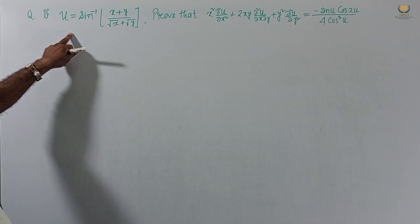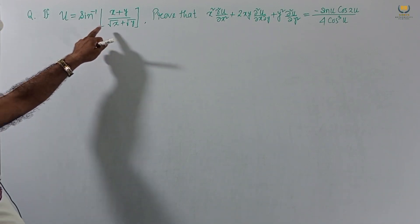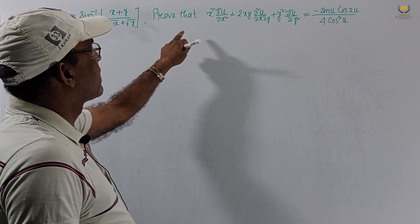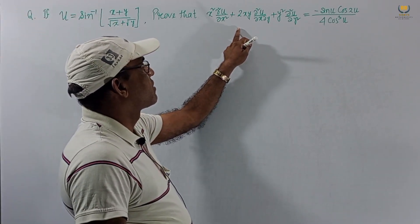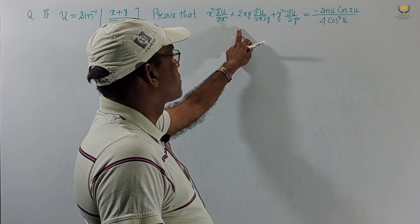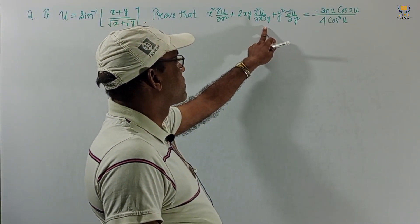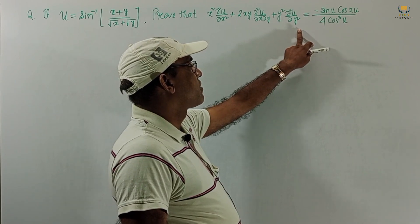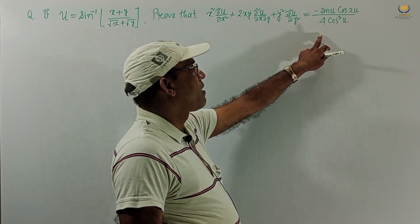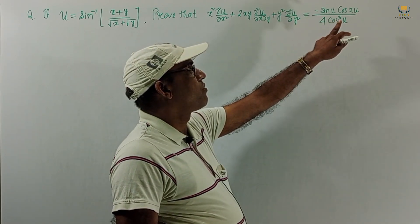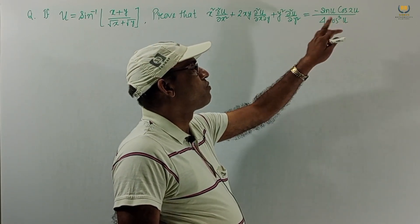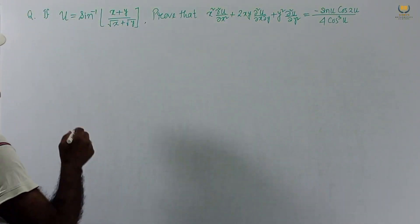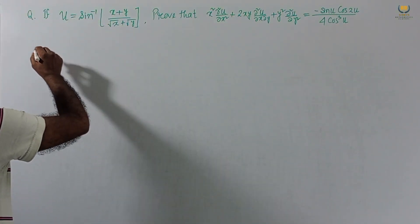Problem: If u = sin⁻¹((x + y) / (√x + √y)), prove that x²·∂²u/∂x² + 2xy·∂²u/∂x∂y + y²·∂²u/∂y² = −sin u · cos(2u) / (4cos³u).